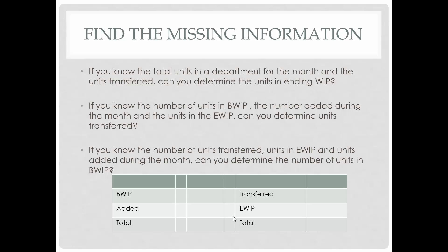Let's find the missing information. If you know the total units in a department for the month and the units transferred out, can you determine the units in ending work in process? If you know the number of units in beginning work in process, the number of units added during the month, and the units in ending work in process, can you determine the units that were transferred? If you know the number of units transferred, units in ending work in process, and units added during the month, can you determine the number of units in beginning work in process? We'll work through these examples.